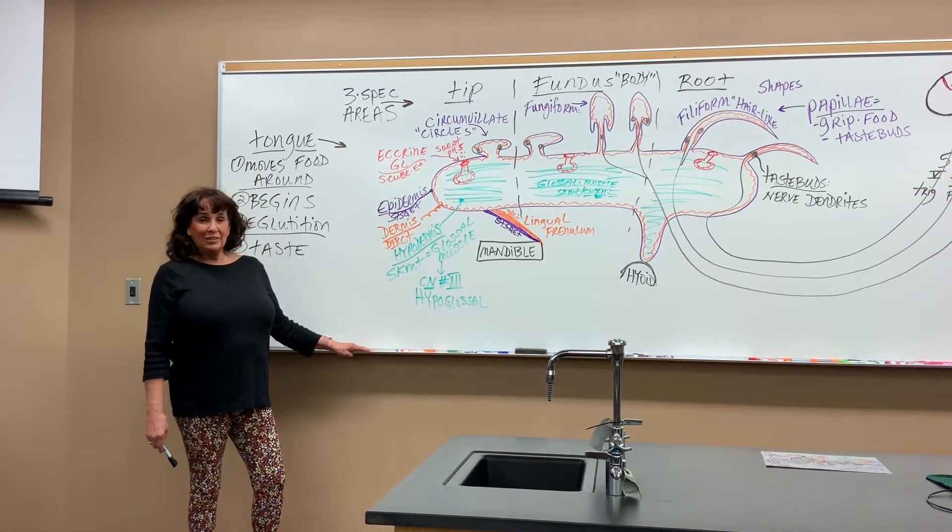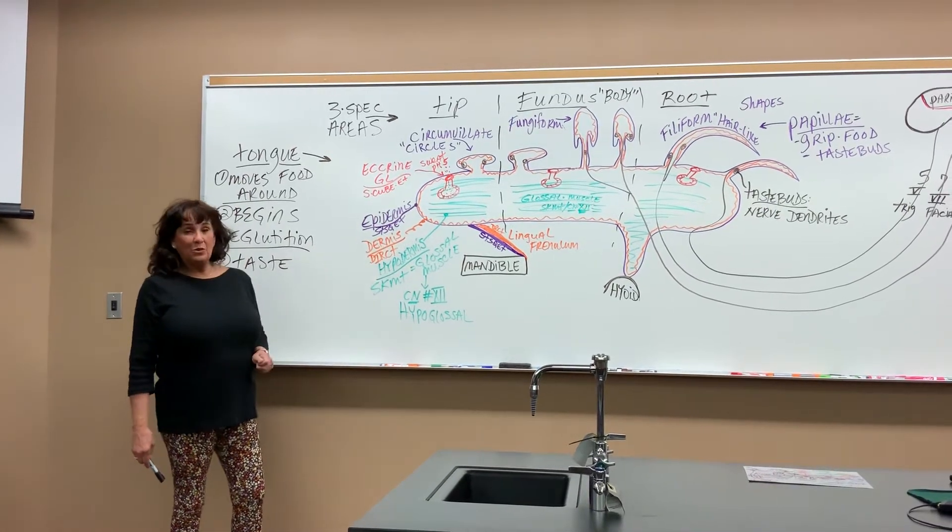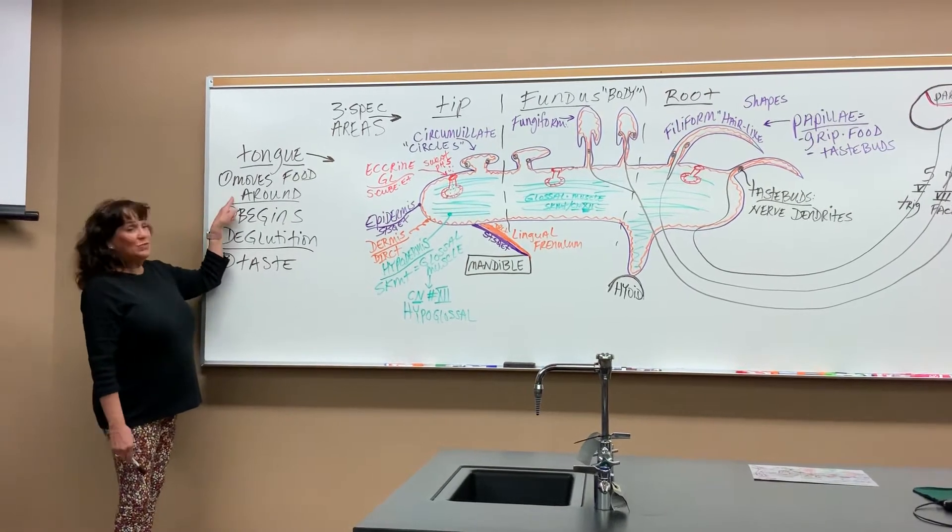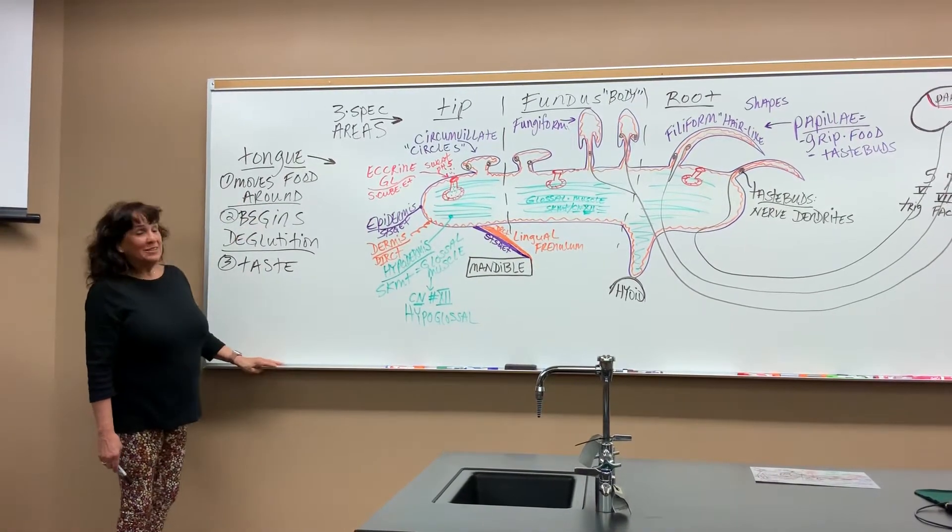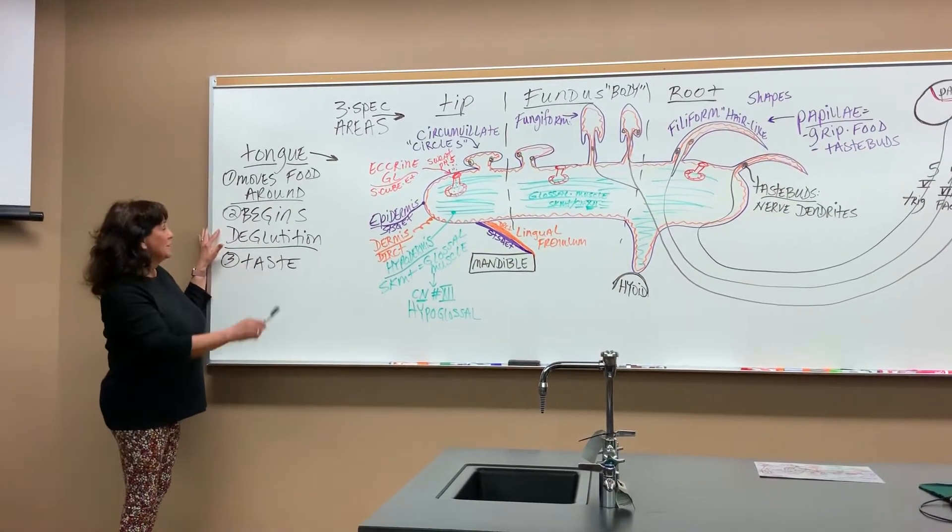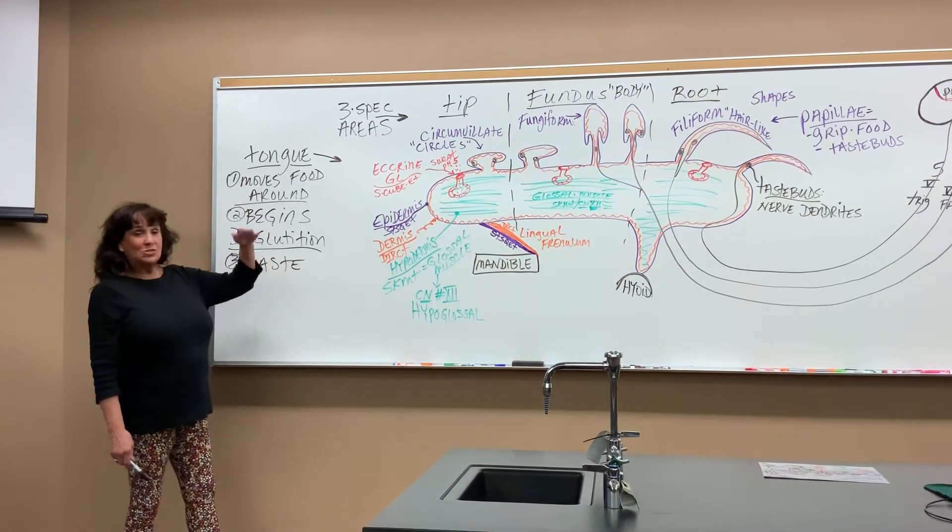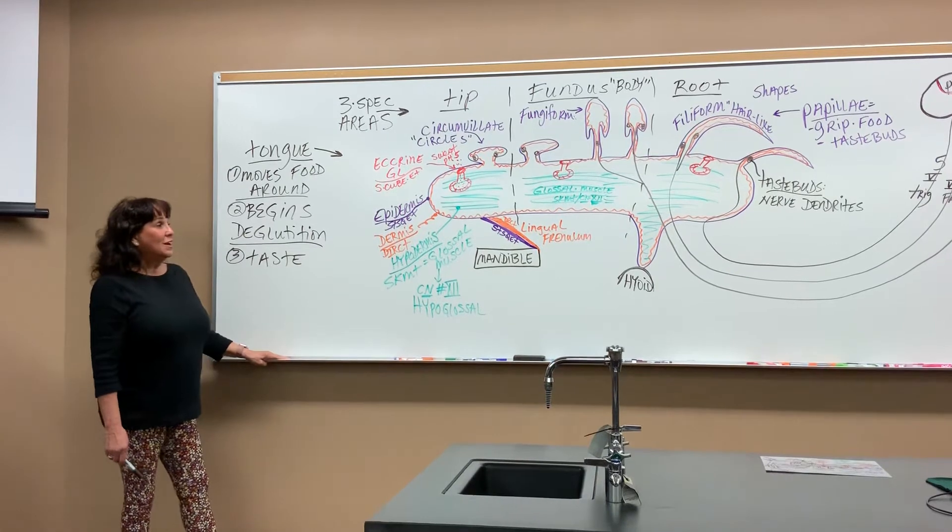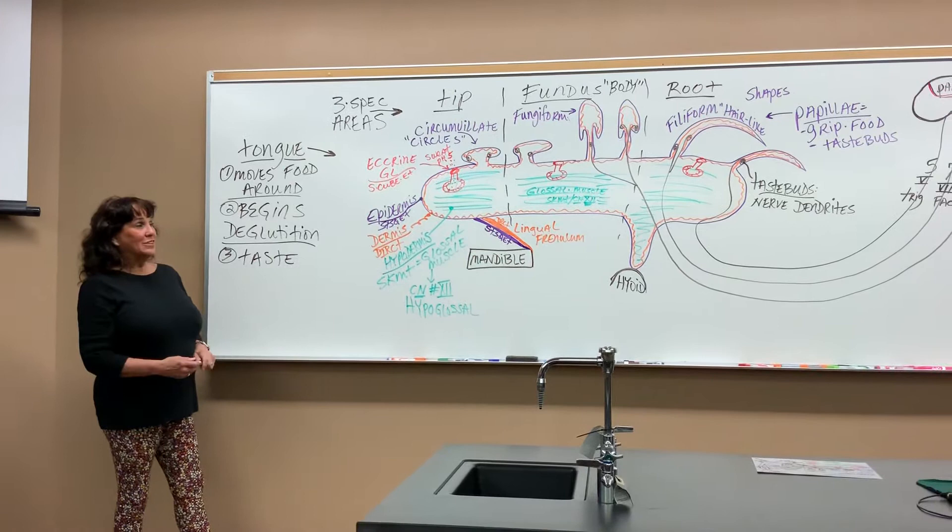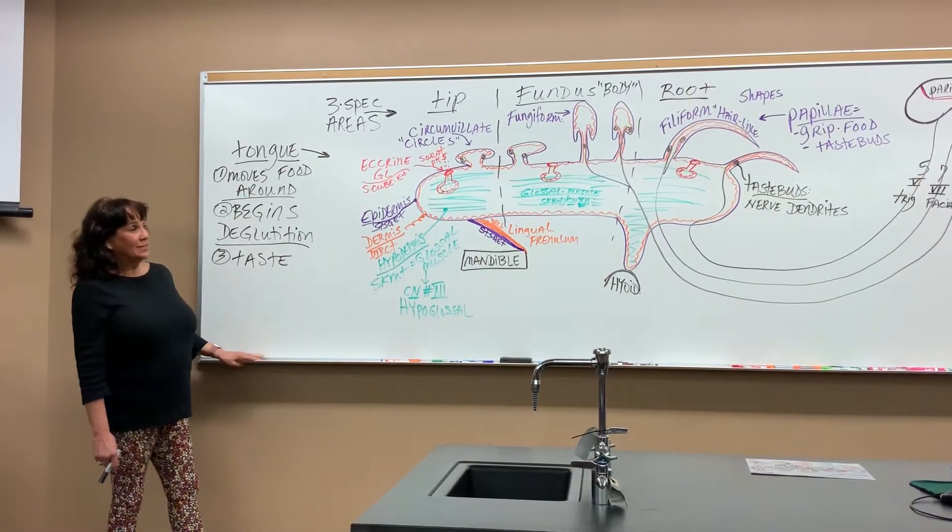Now we're going to talk about the tongue exclusively. The tongue is found in the oral cavity and has three functions. First, it moves food around to the teeth so they can crush, chew, and tear it. Second, it begins deglutition, the act of swallowing, when it pushes food against the soft palate. And it has taste buds for your sense of gustation, the sense of taste.